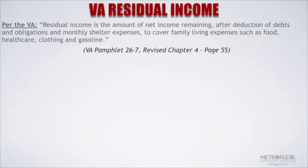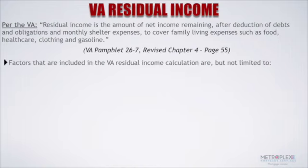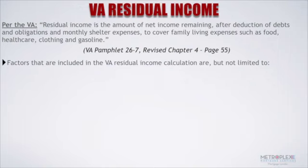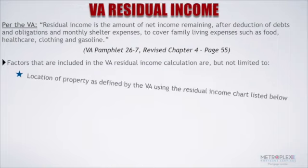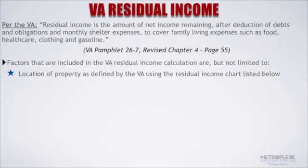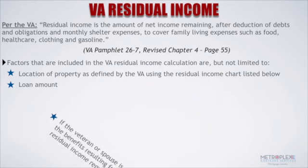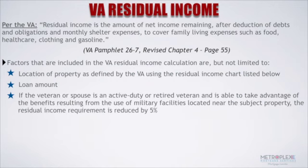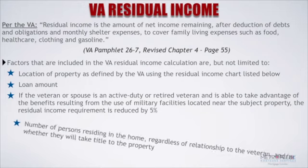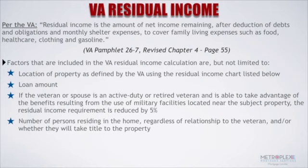Factors that are included in the VA residual income calculation are, but not limited to: location of property as defined by the VA using a residual income chart; loan amount; and if the veteran or spouse is active duty or retired and is able to take advantage of benefits from military facilities located near the subject property, the residual income requirements are reduced by five percent. Also included is the number of persons residing in the home, regardless of relationship to the veteran and whether they will take title of the property.